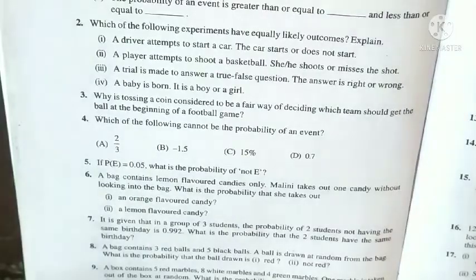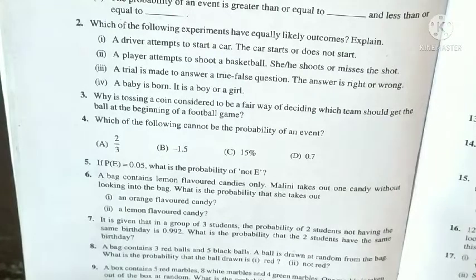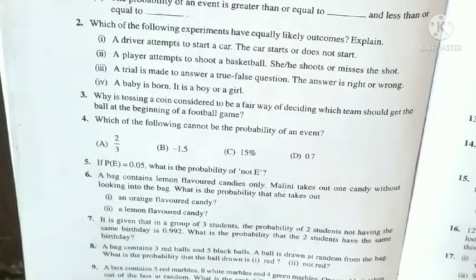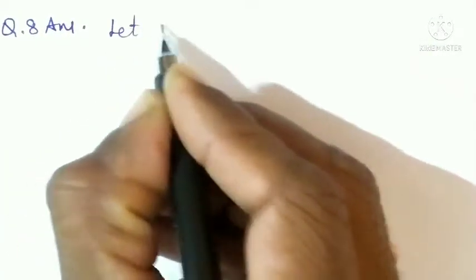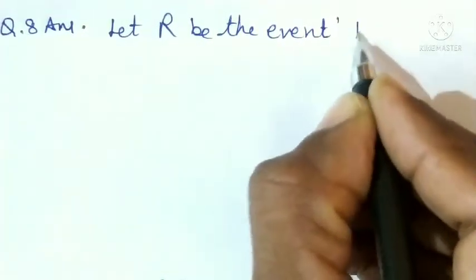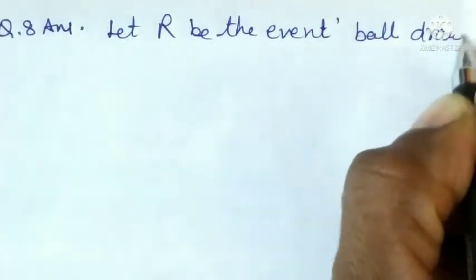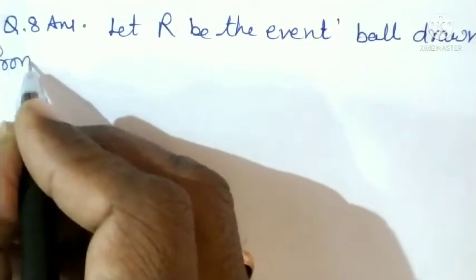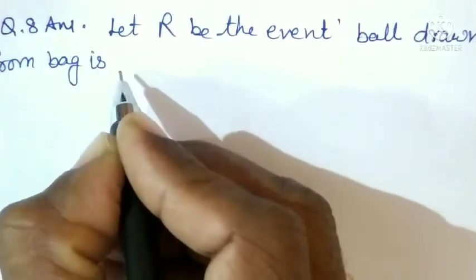Question number 8: A bag contains 3 red balls and 5 black balls۔ ایک ball is drawn at random from the bag۔ What is the probability that the ball drawn is red or not red؟ Let R be the event that the ball drawn from the bag is red.